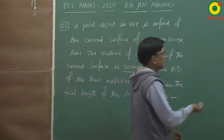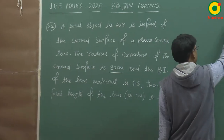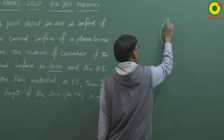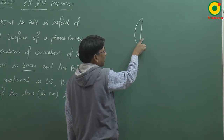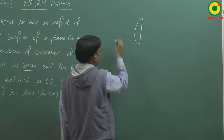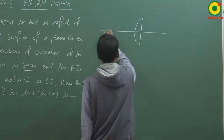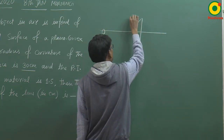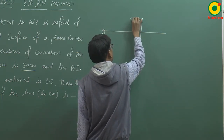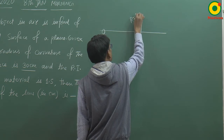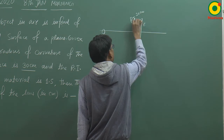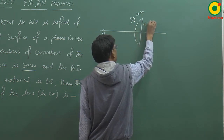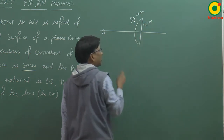कहने का मतलब यह है कि एक lens है जो कि plano convex lens है. इसका मतलब यह हुआ कि एक surface plane होगा और दूसरा surface convex होगा. इसके सामने कोई object रखा गया है. इस surface का radius of curvature दिया गया है 30 cm, और plane surface का radius of curvature obviously infinity होगा.